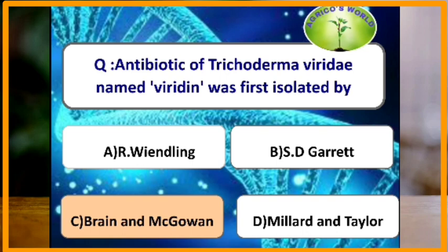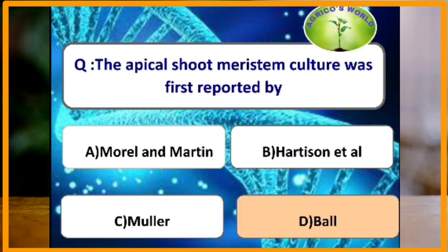The antibiotic of Trichoderma viride named viridin was first isolated by Brian and McGowan. The apical shoot meristem culture was first reported by which scientist? Ball is the scientist who first reported the apical shoot meristem culture.